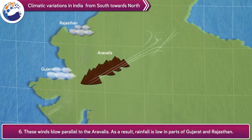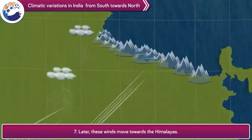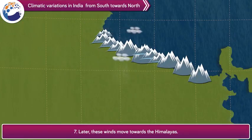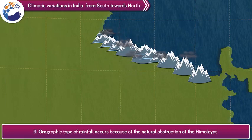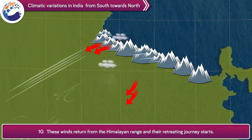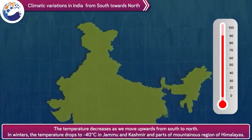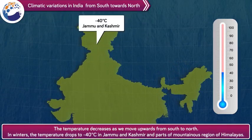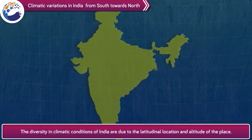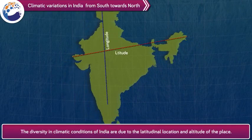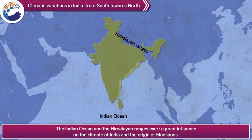These winds blow parallel to the Aravallis. As a result, rainfall is low in parts of Gujarat and Rajasthan. Later, these winds move towards the Himalayas, and their moisture-carrying capacity increases. Orographic type of rainfall occurs because of the natural obstruction of the Himalayas. These winds then return from the Himalayan range and their retreating journey starts. The temperature decreases as we move upwards from south to north. In winters, the temperature drops to minus 40 degrees in Jammu and Kashmir and parts of the mountainous regions of the Himalayas. The diversity in climatic conditions of India is due to the latitudinal location and altitude of the place. The Indian Ocean and the Himalayan ranges exert a great influence on the climate of India and the origin of monsoons.